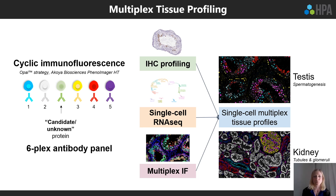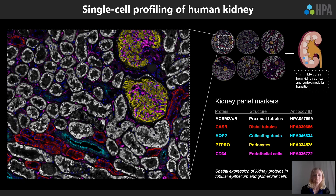This analysis has currently been done on testes, mapping expression to specific parts of spermatogenesis, and on kidney, looking at different types of tubules and structures in the glomeruli. The five-plex panel for kidney outlines different tubules — proximal tubules, distal tubules, and collecting ducts — as well as markers for podocytes and endothelial cells.